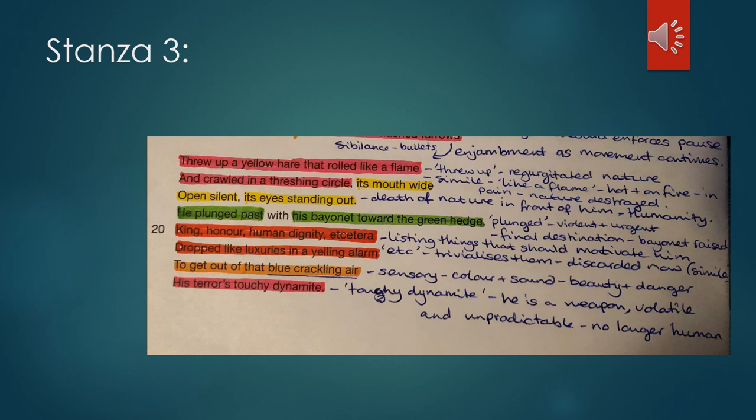Line 22, dropped like luxuries in a yelling alarm to get out of that blue crackling air. So blue crackling is really sensory. We've got the color blue, which is very alien and unusual to be seen in a battlefield. The sound as well, crackling, is almost onomatopoeic. It sounds exactly like the sound it's replicating, which means as readers we are still immersed into this mise-en-scène, the middle of the scene, what's going on around us. It's very auditory, very visual. It's also quite beautiful. Blue crackling air sounds quite pleasant, but at the same time that's juxtaposed with the obvious danger that the air crackling represents, which is the sound of those bullets exploding around him.